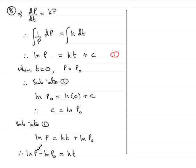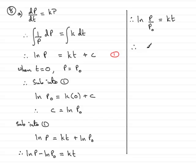Now we use the log rule — when you subtract logs, we group them together as the natural log of p over p₀, equals kt. That's the division rule for natural logs, and what I've done now is reduce my natural log equation down to two terms, one on each side. When you get to that stage, you next anti-log, so anti-logging gives p over p₀ equals e to the kt. What I've got to do is multiply both sides by p₀, and we have p equals p₀ multiplied by e to the kt. And that brings us to the end of part A.